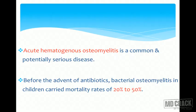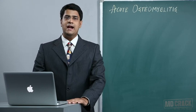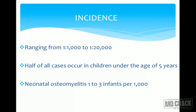Acute hematogenous osteomyelitis is a common and potentially very serious disease, very commonly seen in children and younger age groups. Before the advent of antibiotics, bacterial osteomyelitis in children carried a mortality rate of almost 20 to 50 percent. With newer antibiotics this has significantly reduced. The incidence ranges from 1 in 1,000 to 1 in 20,000. Half of all cases in children are under the age of 5 years, and neonatal osteomyelitis occurs in 1 to 3 infants per thousand.